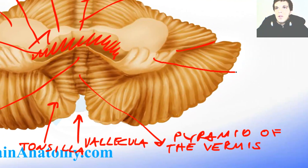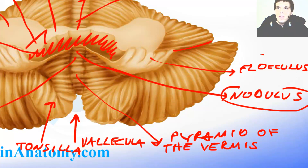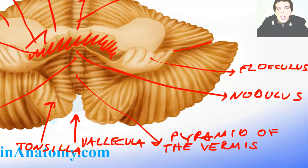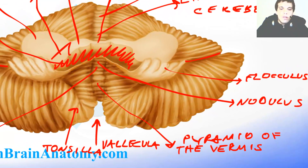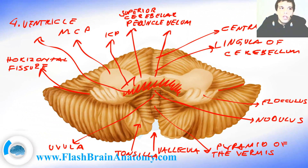We had the flocculus, and this part over here was called the nodulus. The nodulus and flocculus create the floccular-nodular lobe, but I will talk about the lobes of the cerebellum in the fourth video about the cerebellum. To watch the video about the cerebellum from the cranial perspective, please check out the next video. If you like my drawings and lessons, please check out my website, flashbrainanatomy.com.